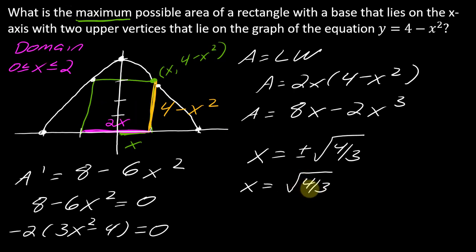So now, because this is a closed domain, the only possible points that are going to be maximums or minimums are going to be 0, 2, and this critical point that I found. Now,